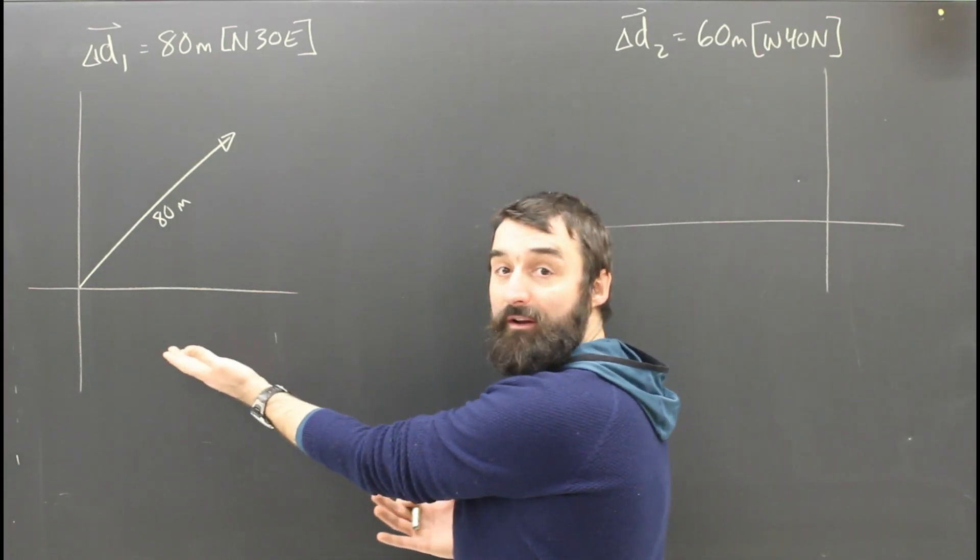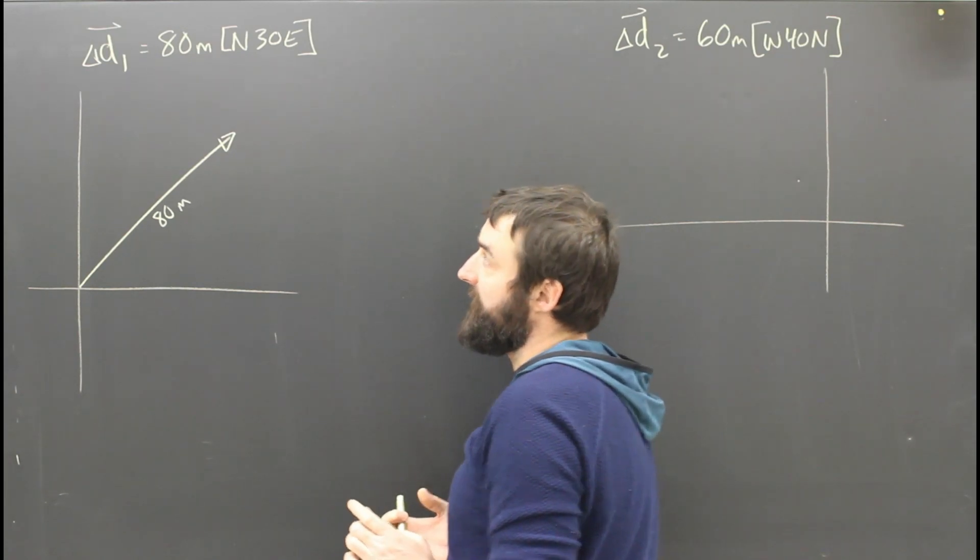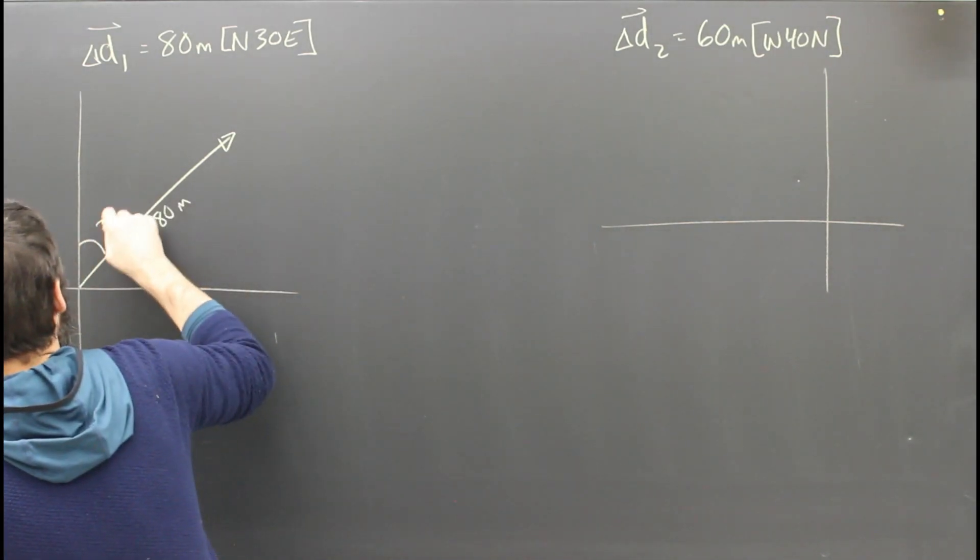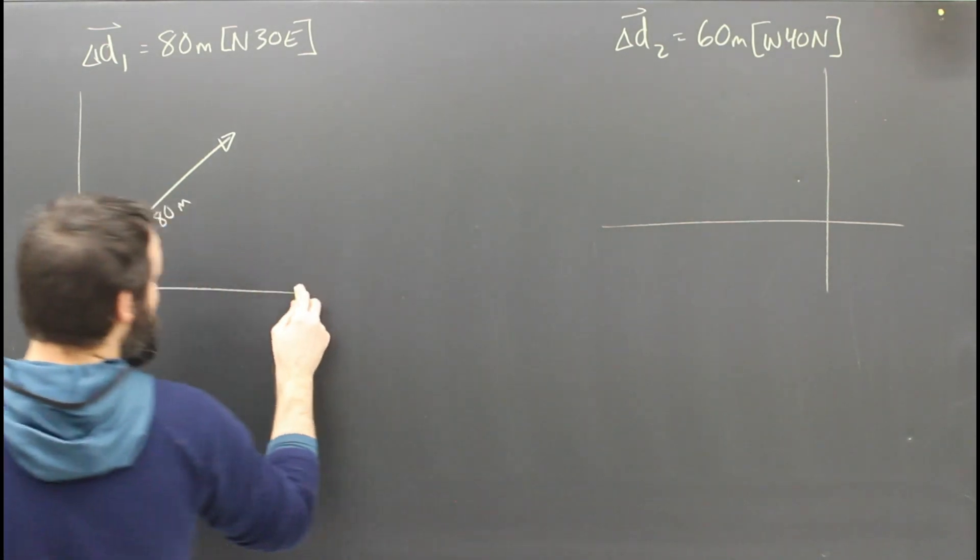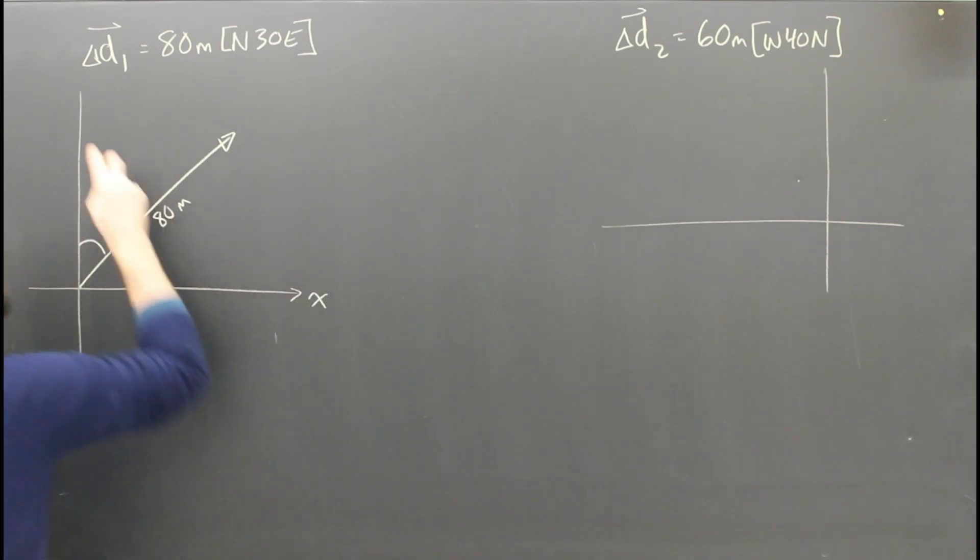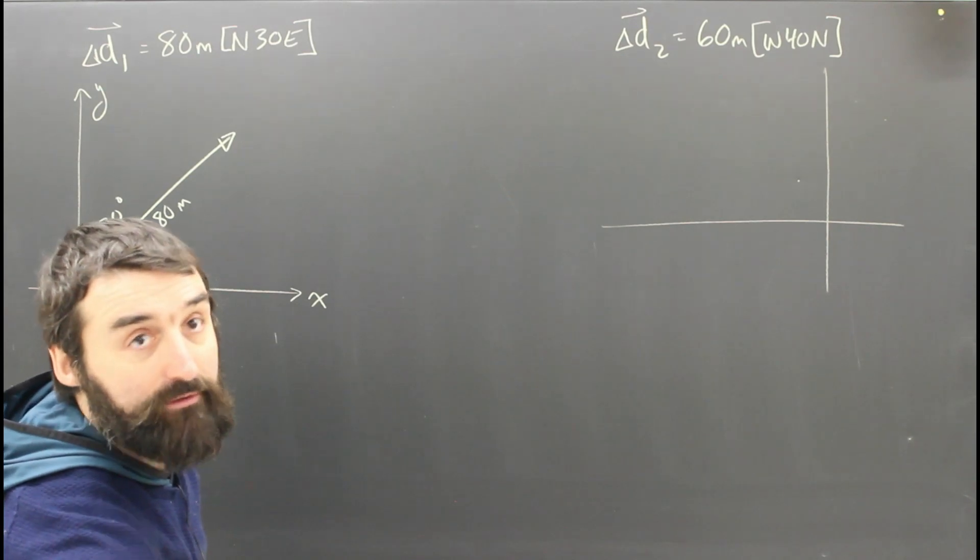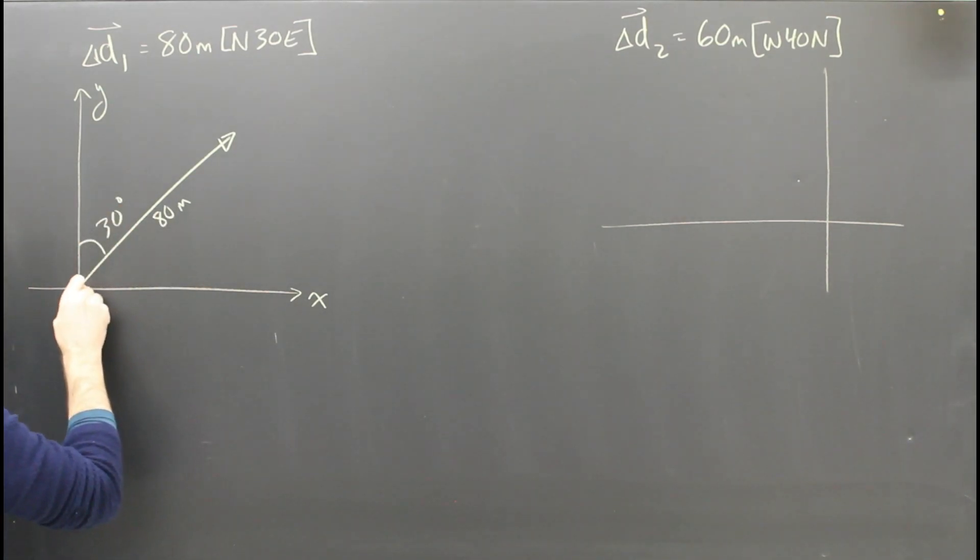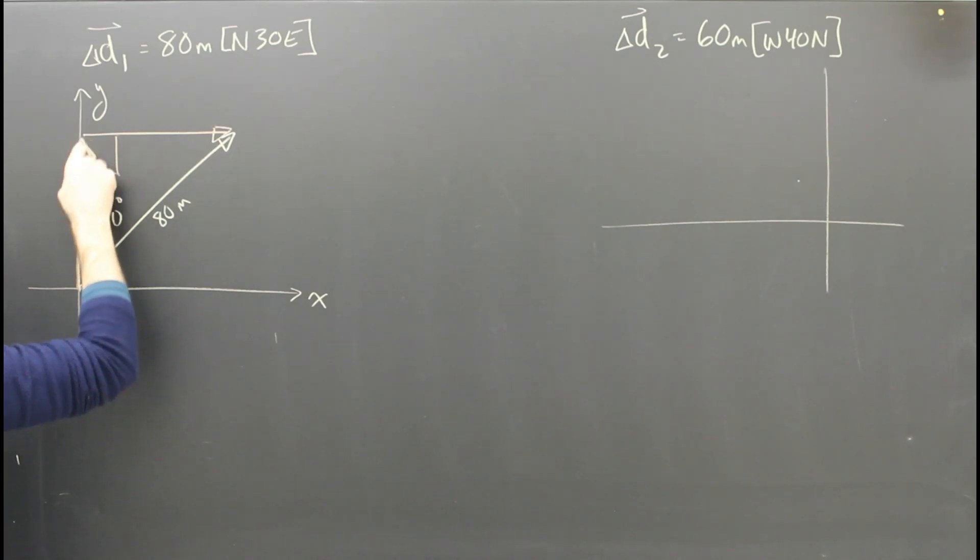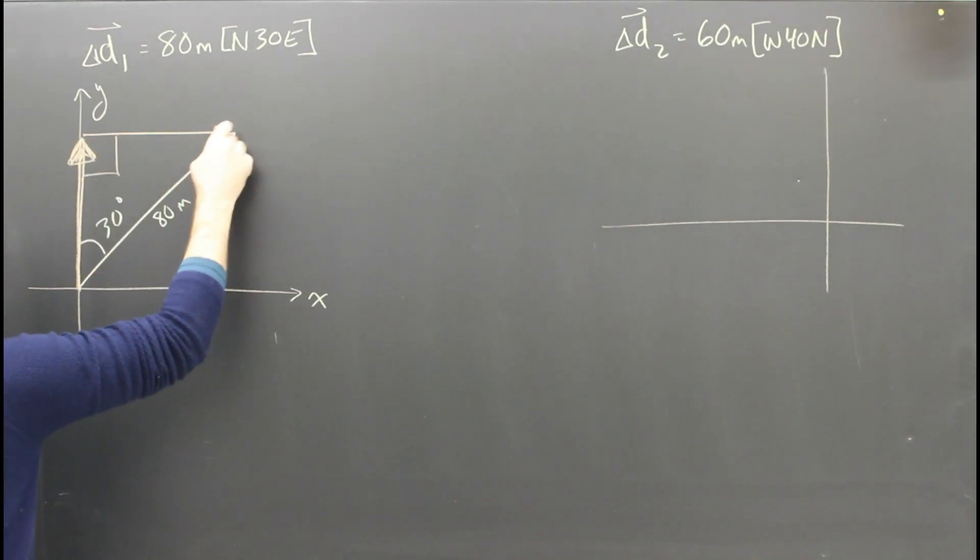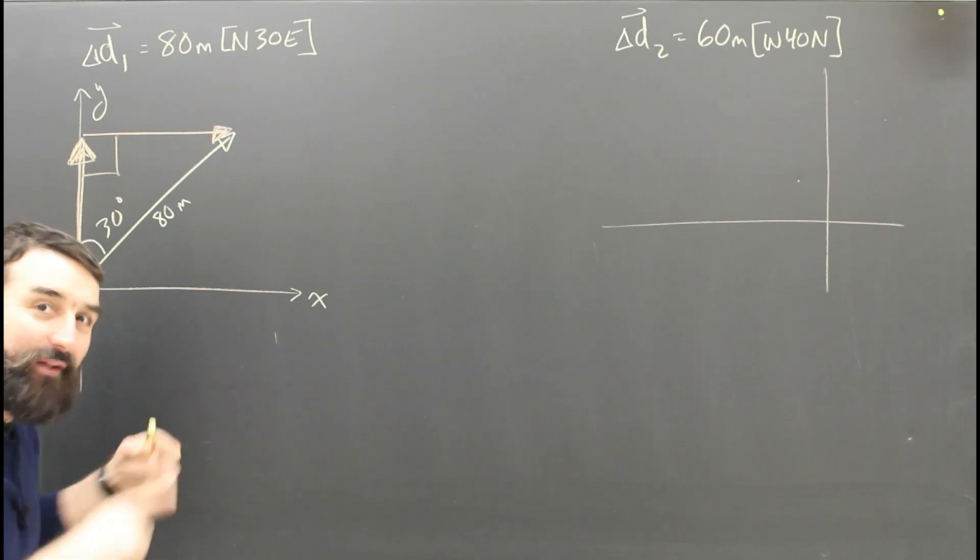My first step when I'm trying to find components is to draw the original vector, which I've done. Let me label the angle, 30 degrees. My second step was to define the x and y direction, so I'm going to call this direction x, the east direction, and I'm going to call north y. So now I'm going to draw a right angle triangle, where the sides are in the x and y direction, and the original vector is the hypotenuse. These are arrows, they're not dotted lines, they're not lines without a head, they point in a direction. Make sure that's clear.